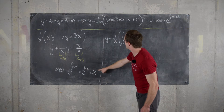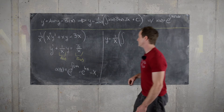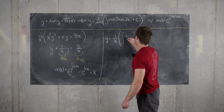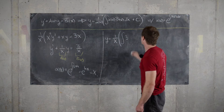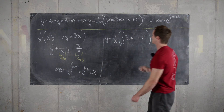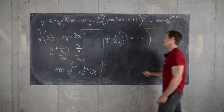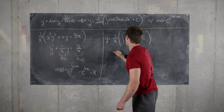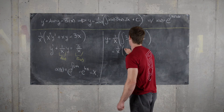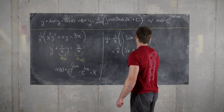alpha of x times b of x, which is just 3 dx, plus a constant of integration. That gives us 1 over x times the quantity 3x plus a constant.